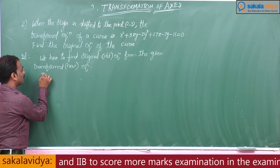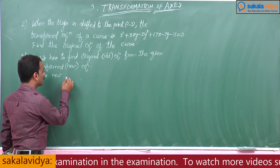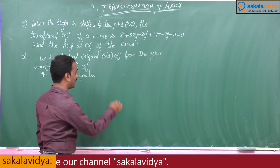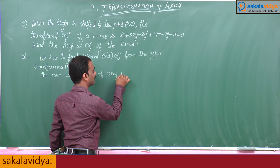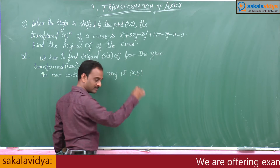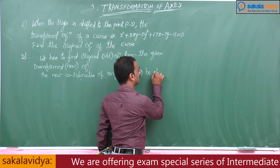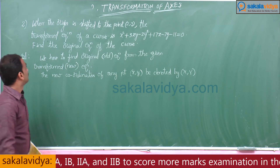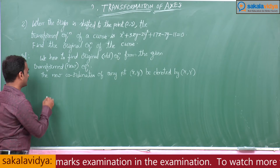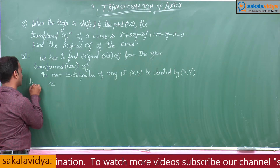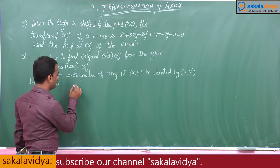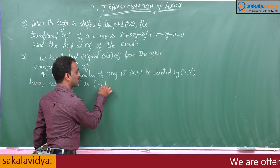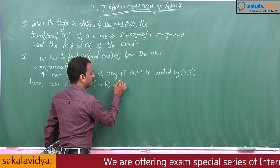For that, the new coordinates of any point — small x, y — be denoted by capital X, Y. Given that the origin is shifted to (2, 3), that is why the new origin is denoted by small h, k, which is equal to (2, 3).